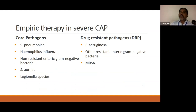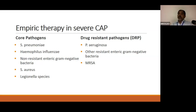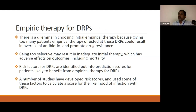Empiric therapy for severe community-acquired pneumonia should cover core pathogens: Streptococcus pneumoniae, Haemophilus influenzae, non-drug-resistant enteric gram-negative bacilli, Staph aureus, and Legionella species. Empirical cover of drug-resistant pathogens — Pseudomonas, MRSA, or ESBL-producing bacteria — should be added when risk factors are present. It is difficult to decide whether to cover for drug-resistant pathogens in severe CAP admitted to ICU, since under-treatment increases mortality while over-treatment produces drug resistance.